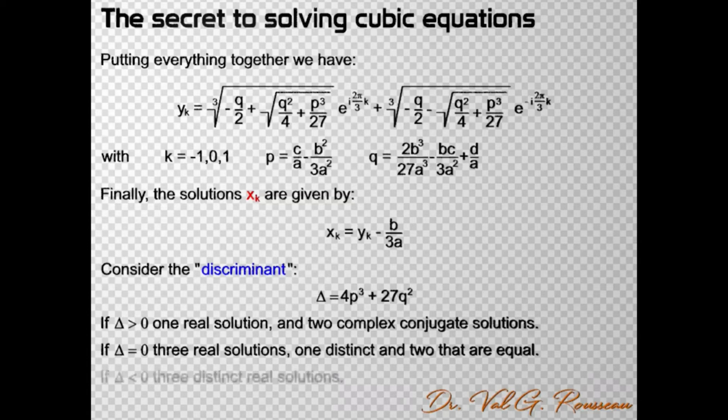If Δ is negative, the two cube roots are complex conjugate and y itself is a sum of complex conjugate numbers for any value of k. Thus, the result is a real number. So, we have three distinct real solutions. So, we have the complete solution to any cubic equation and we could stop here.